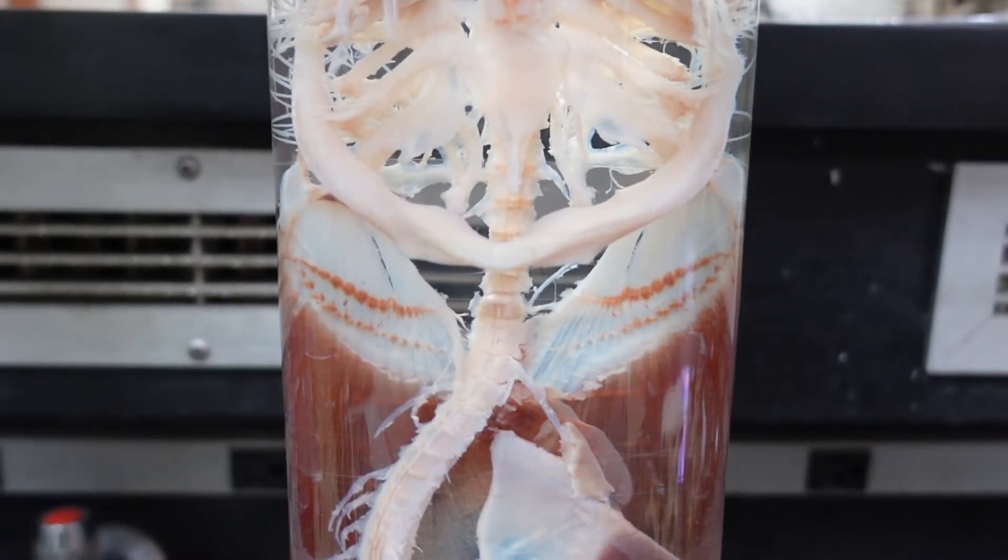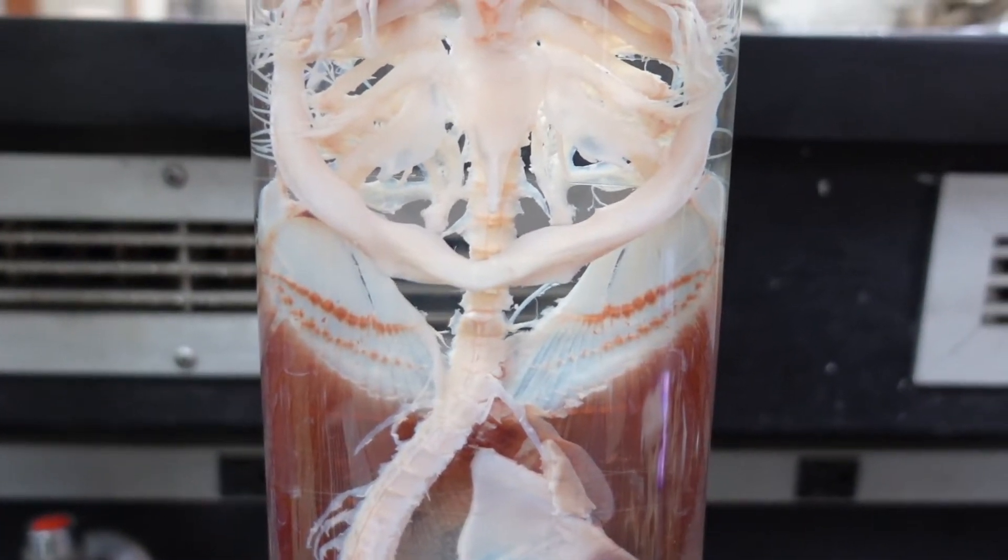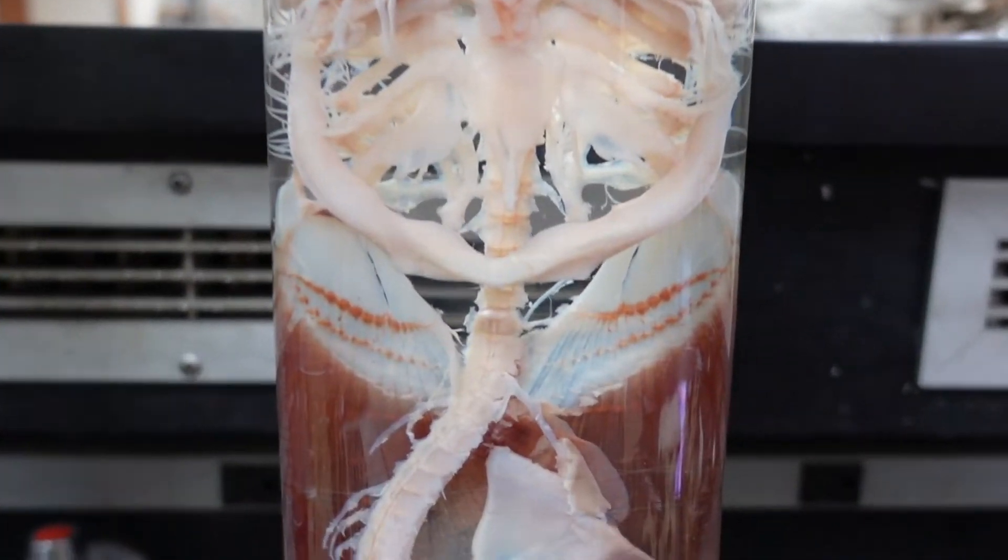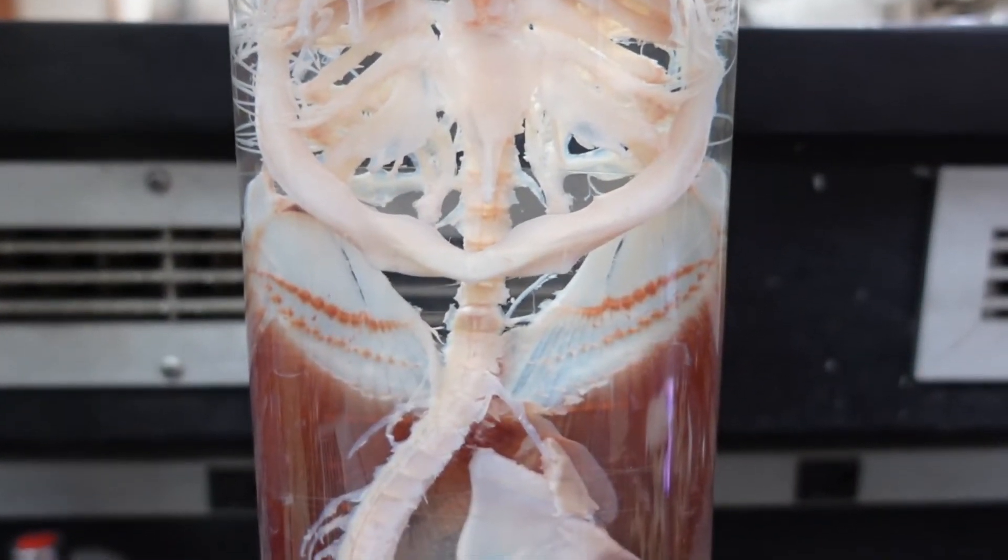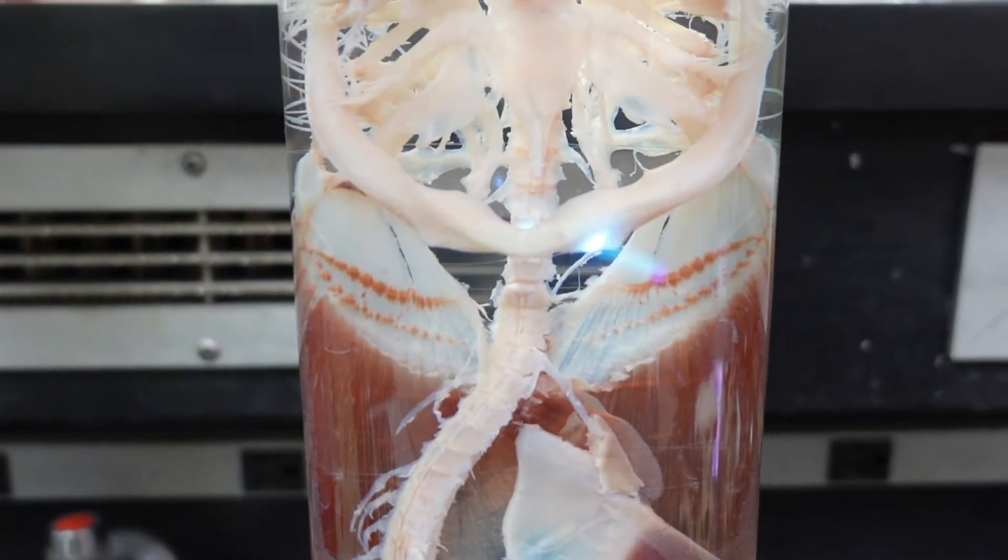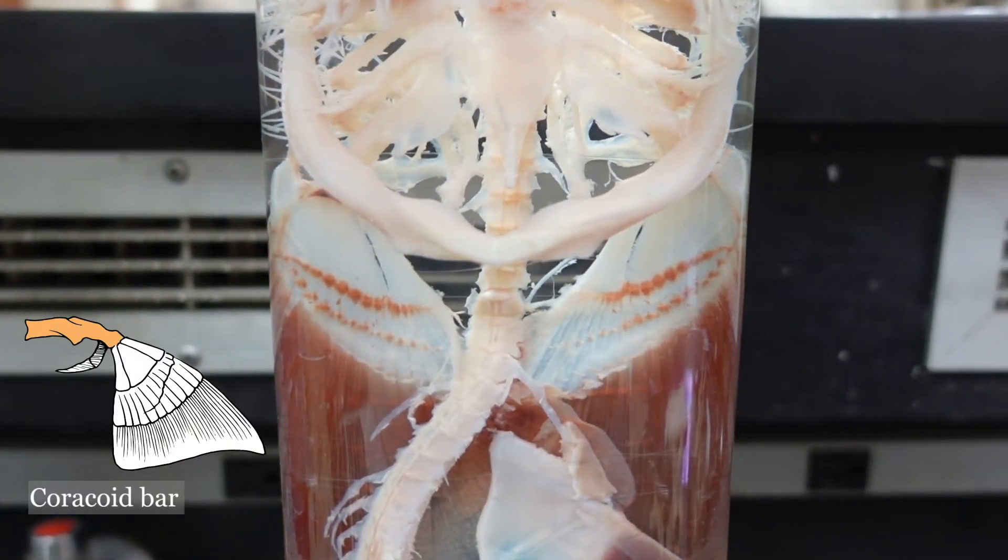Hi everyone, in this video we're going to cover the shark appendicular skeleton. To start, we're looking at the pectoral girdle. We see this very prominent large bar coming across here. This is the coracoid bar.